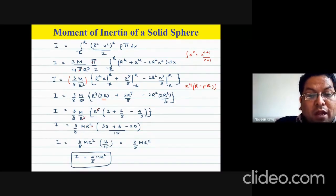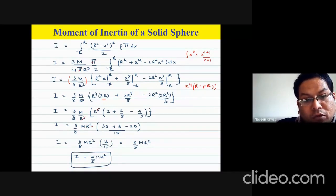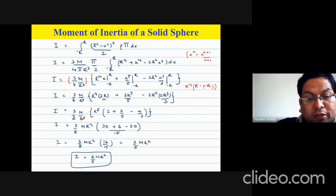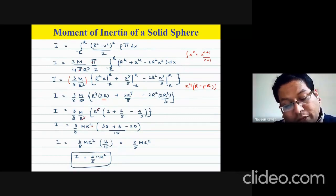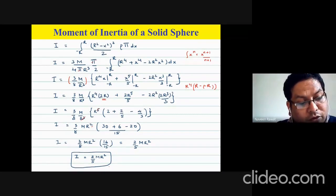That is the value of the moment of inertia of a solid sphere rotating about its center of mass through its diameter: I = 2/5 mR².